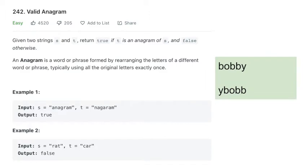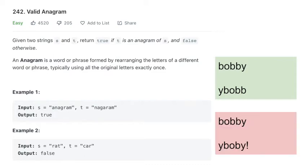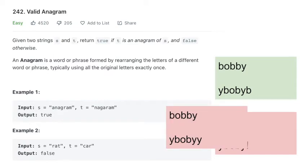Another example on the right-hand side is Bobby — B, O, B, B, Y — and the group underneath Y, B, O, B, B. These are anagrams because the letter count is the same. What isn't is the one below with an exclamation mark — there's a character that appears in one which does not exist in the other, so it's not a valid anagram. Also, if the length is different, then it's not an anagram because there's an extra letter.